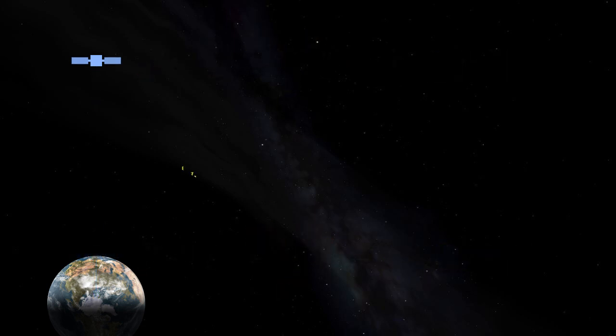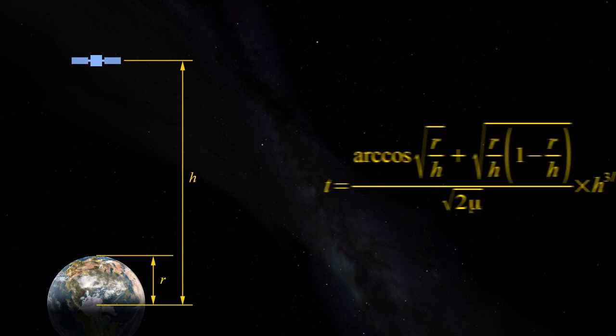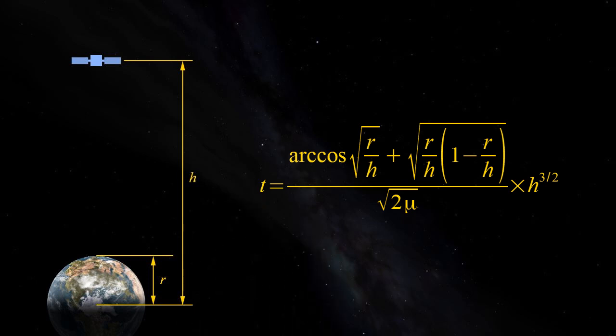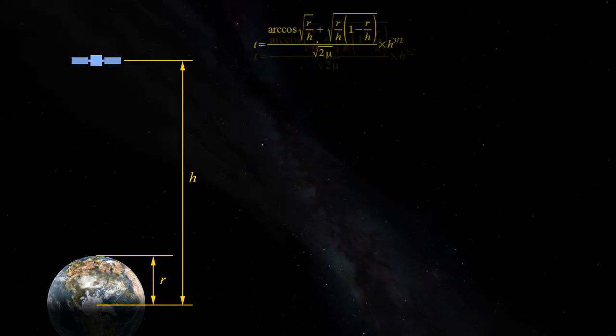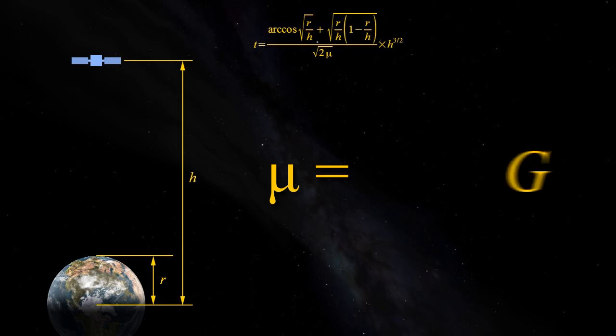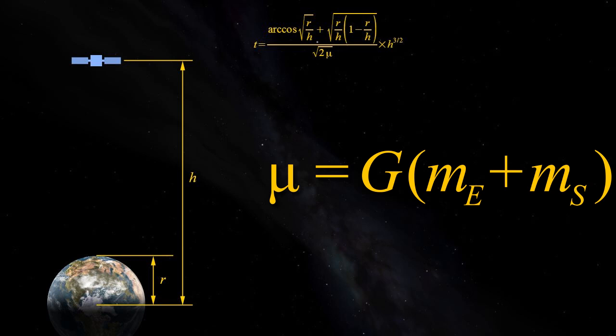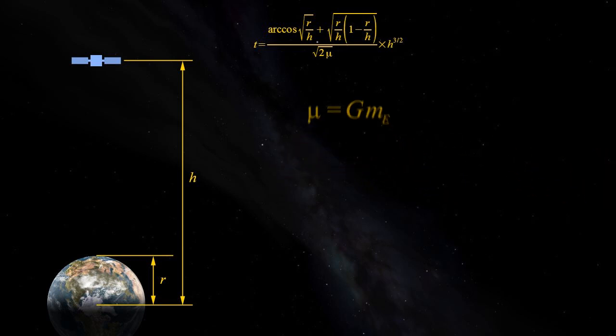The time taken for an object to fall from a height h to a height r in those circumstances is the arc cosine of the root of r over h, plus the root of r over h, times 1 minus r over h, all over the root of 2 mu, times h to the 3 over 2. Mu is the universal gravitational constant, times the combined mass of the two bodies, Earth and our five-ton satellite, the latter being insignificant.